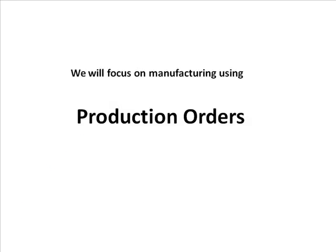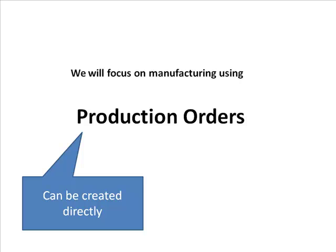We'll focus on manufacturing using production orders. The output of MRP would be a planned order that gets converted into a production order — that's the input point to this module. You run MRP, do the planning, and figure out which materials are required. MRP creates a planned order because you created a requirement for, say, 500 units of the finished product, in addition to purchase orders for raw materials. That planned order gets converted into a production order and then you produce. That is the more typical route.